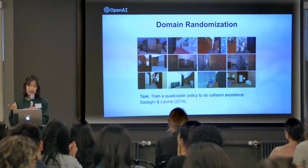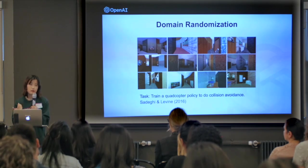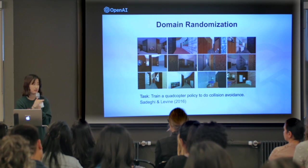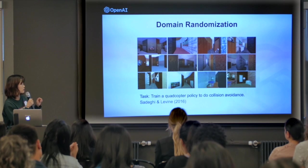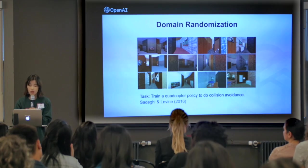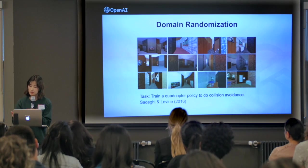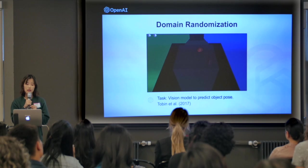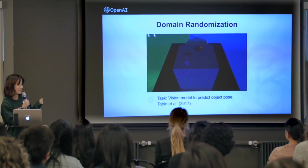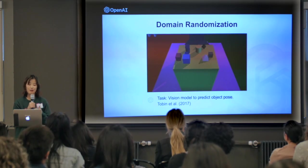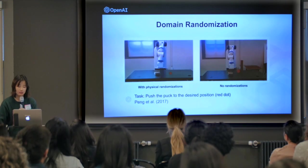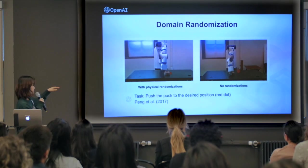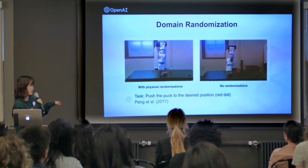This idea is relatively new — I think it was first proposed in 2016, where researchers trained a model to control a drone flying across furniture in indoor scenarios. They randomized colors and texture of walls and furniture, and without seeing any real-world images, showed it performed pretty well in reality. At OpenAI, we used the same approach to train a visual model to predict the position and orientation of objects. Some of the randomization looks totally unrealistic, but somehow it worked very well when we fed the model real images. We also showed that randomizing all physical dynamics — this fetch robot trained with domain randomization — worked much better than the one without.